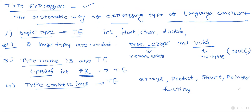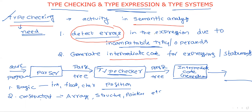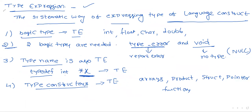Briefly summarizing: type checking is the activity performed during the semantic analysis phase. Its main purposes are detection of errors — specifically checking for incompatible operands — and generation of intermediate code. This is the position of the type checker in the compiler pipeline. Type expression is the systematic way of representing a data type or language construct.